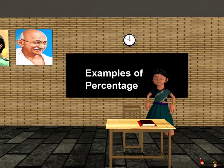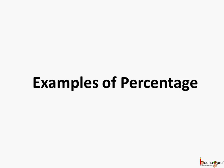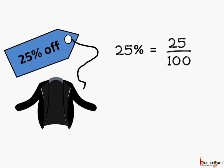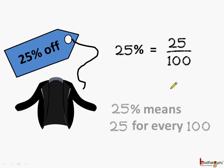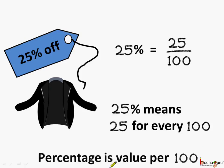Good morning children. Now you know what percentage is. Let us see more examples of percentage to understand better. As we saw, 25% means 25 out of 100. So when the discount was 25%, it meant the price was reduced by 25 for every 100 rupees. Remember, percentage is a value per 100.